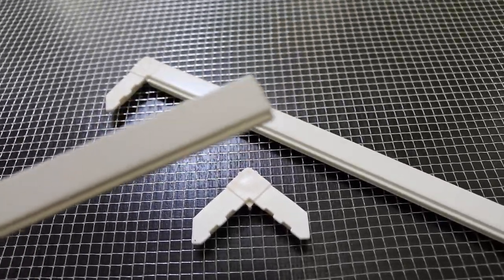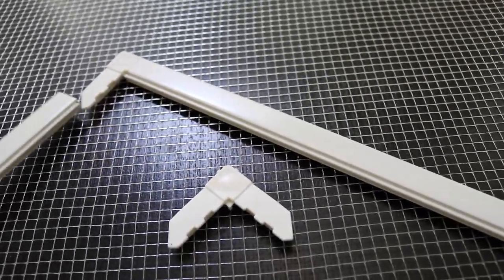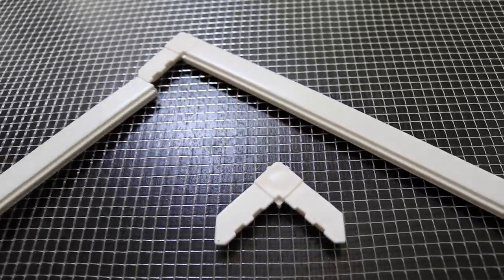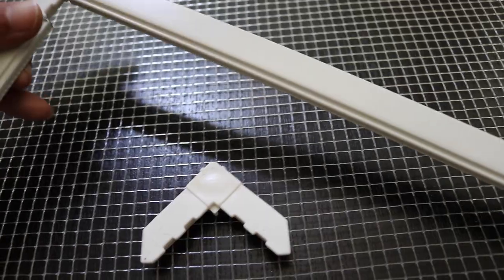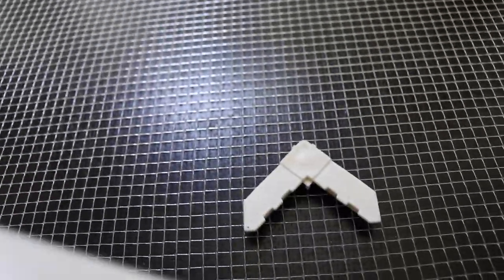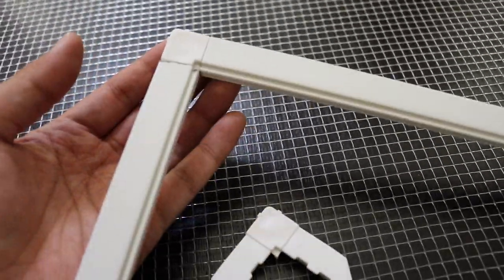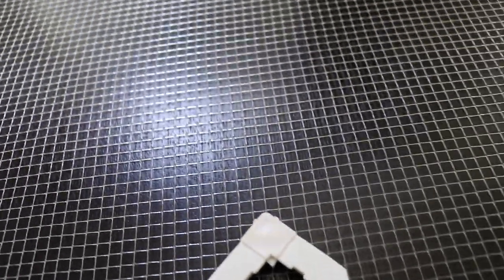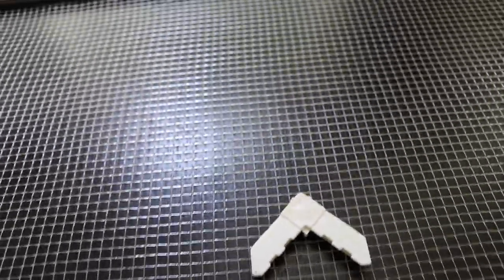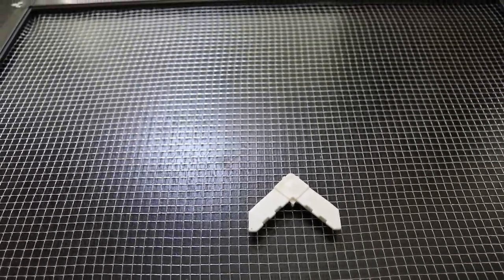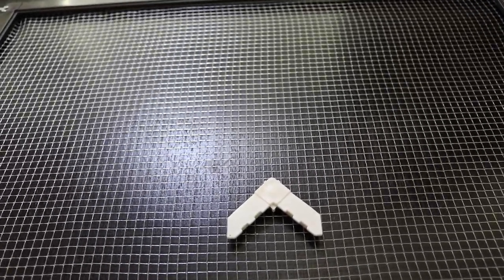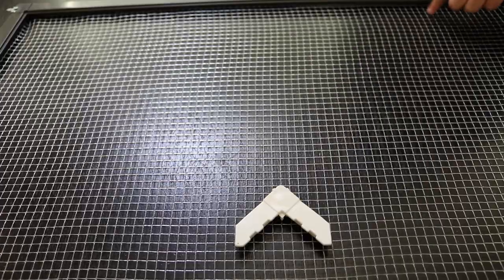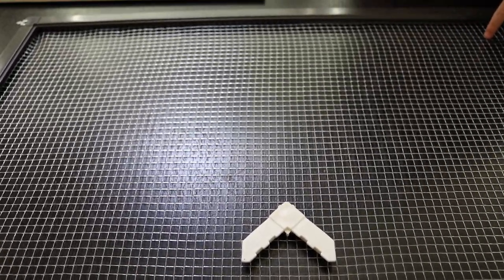But here's a strip I cut down and all you do is you slide it into the corner piece and you're going to do this for all four sides, essentially making a window frame. These things are used for window screens, replacement window screens.